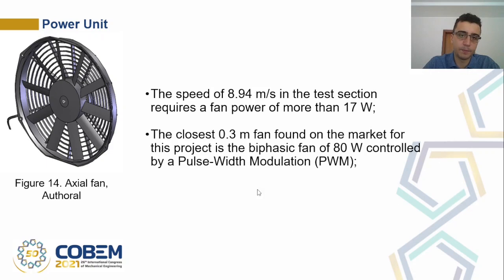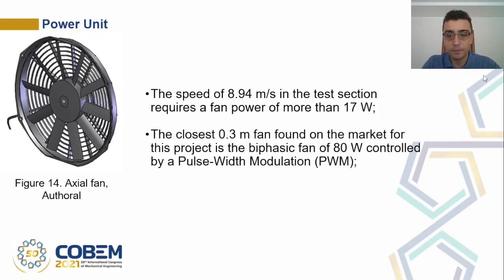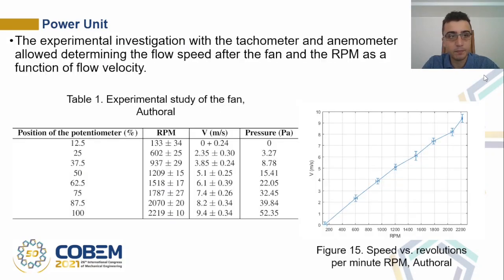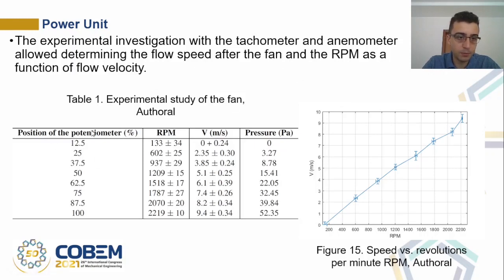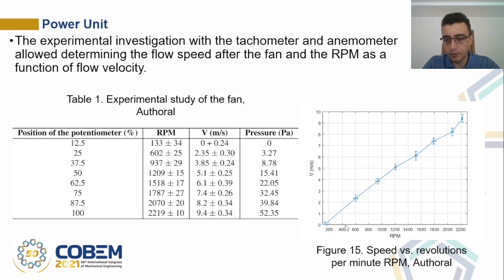The power unit, or axial fan: a speed of 8.94 meters per second in the test section requires a fan power of more than 70 watts. The closest 0.3-meter fan found on the market is an 80-watt fan controlled by pulse-width modulation. The experimental investigation with a tachometer and anemometer determined the flow speed after the fan and the RPM as a function of flow velocity. At a potentiometer position of 50 percent on the PWM, we have 1200 RPM with a velocity of 5.1 meters per second and a dynamic pressure of 15 Pascals. This graph shows the increase of RPM with the increase of flow speed.